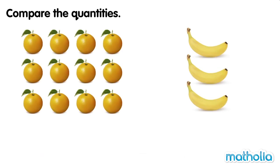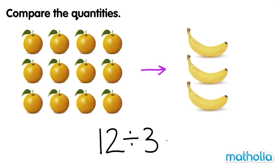Let's compare the number of oranges to the number of bananas. There are twelve oranges and there are three bananas. Twelve divide three equals four. There are four times as many oranges as there are bananas.